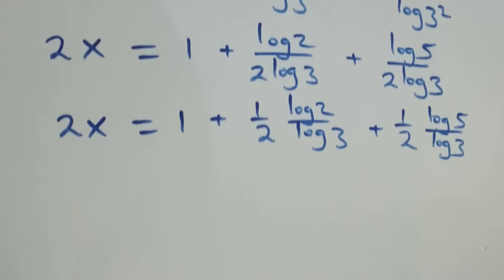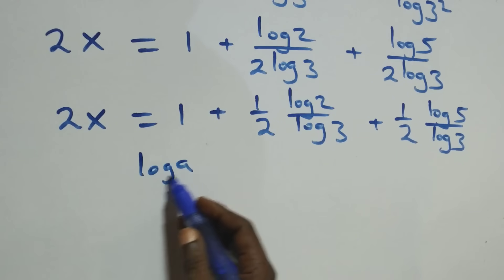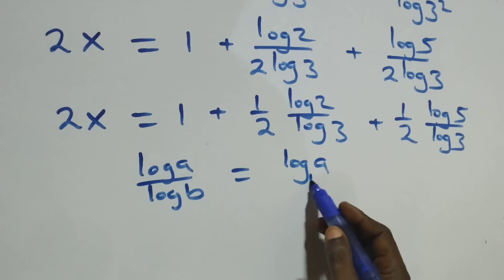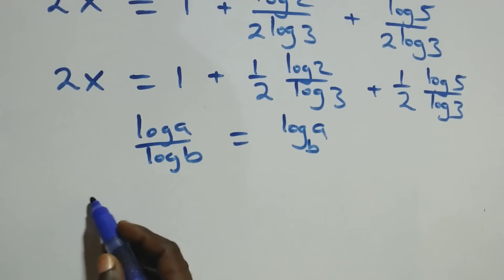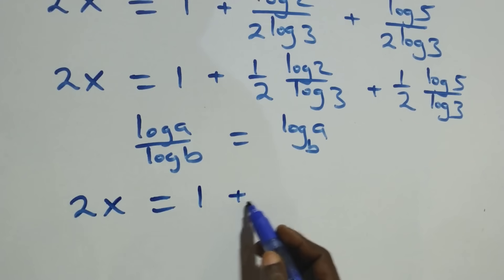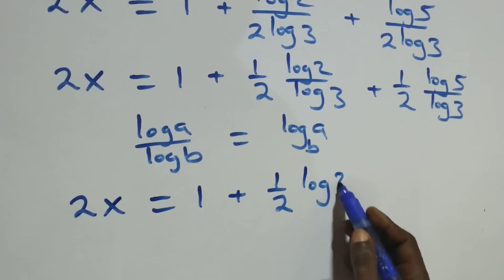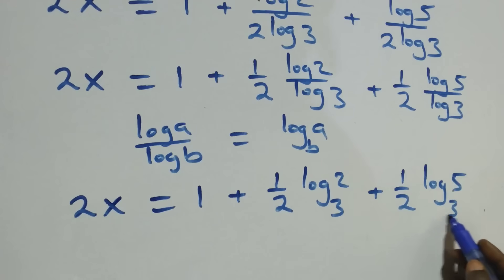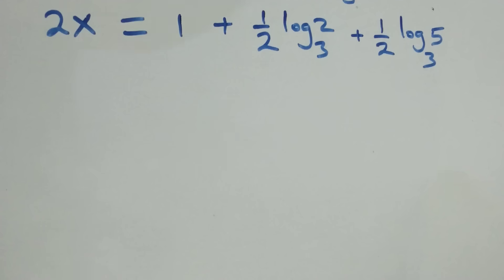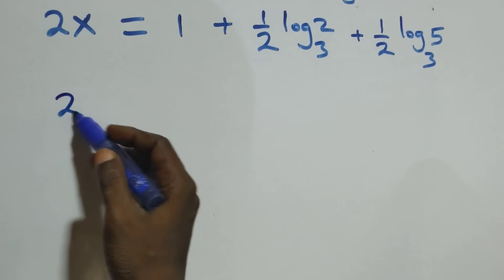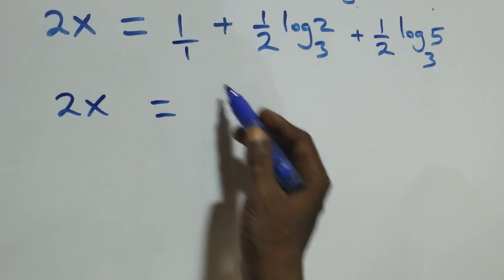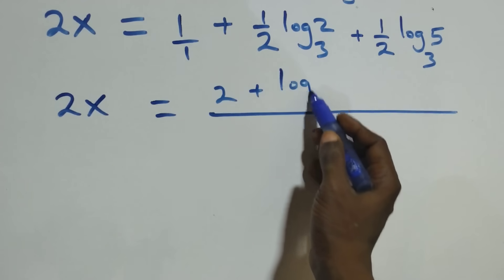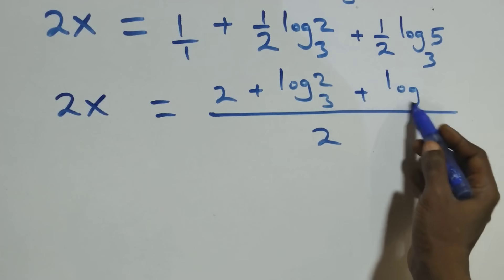The next step: we apply the change of base formula, where log 2 over log 3 is the same as log base 3 of 2, and log 5 over log 3 is log base 3 of 5. Bringing this together as one fraction, we have 2x equals 2 plus log base 3 of 2 plus log base 3 of 5, all over 2.